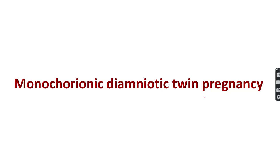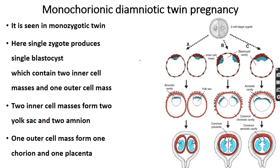Monochorionic diamniotic twin pregnancy is seen in monozygotic twin pregnancy. A single zygote produces a single blastocyst containing two inner cell masses and a single outer cell mass. The single outer cell mass produces one chorion and one placenta, while the two inner cell masses produce two yolk sacs and two amniotic sacs.